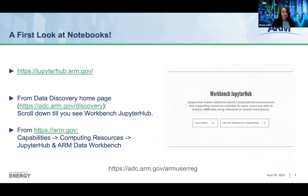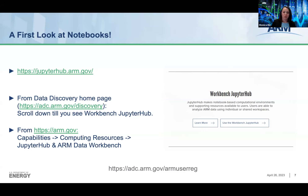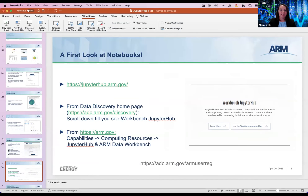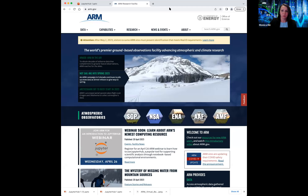We're going to start off by taking a first look at notebooks. If you have never touched a Jupyter notebook in your life, now is your chance. We've got several different ways that you can actually get to ARM's Workbench JupyterHub environment. You could just go straight to JupyterHub.ARM.gov. I'm also going to show you how we can navigate to it from the data discovery interface and from ARM's homepage. Since this is a demo as much as a PowerPoint slide, I'm going to share my screen and we're going to look at Google Chrome.